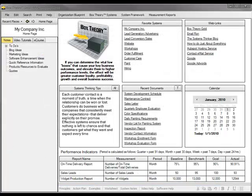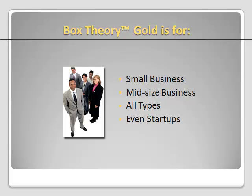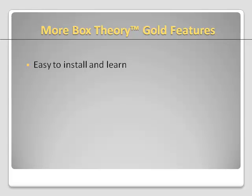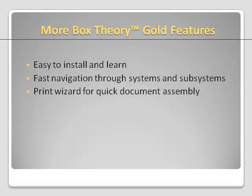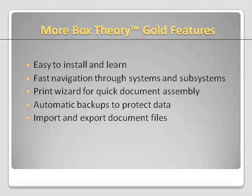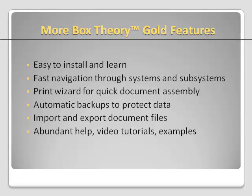Now, if all of this is new to you or seems a little too heavy or complex, I assure you it's actually quite easy once you get going. The software does most of the work for you, so don't be worried. Before we close, let me just touch on a few more features. The software is very powerful; however, it was designed with small business owners and managers in mind. It is easy to install and easy to learn. You can quickly view your business activities, departments, and systems across the organization using a unique and intuitive navigation tool. You can print parts or all of your organization blueprint or your system documents using the print wizard. Your valuable company data files are protected with regular automatic backups. You can import or export documents to and from the Box Theory Gold database. There is also a great deal of help built into the software, including business principles, software help, video tutorials, real-world examples, predefined lists, and even worksheets to get you thinking.